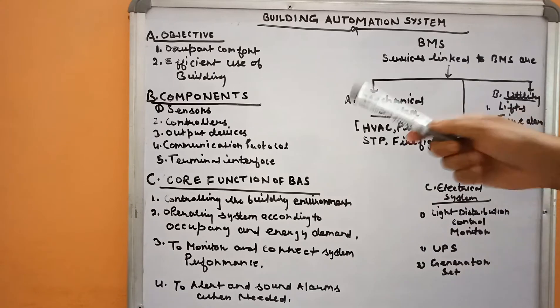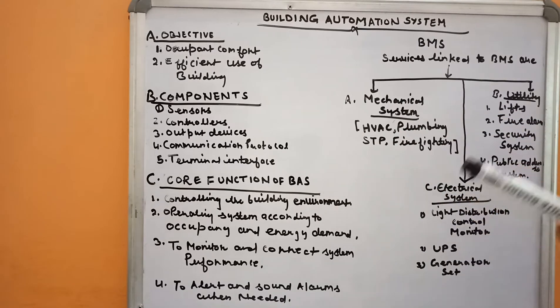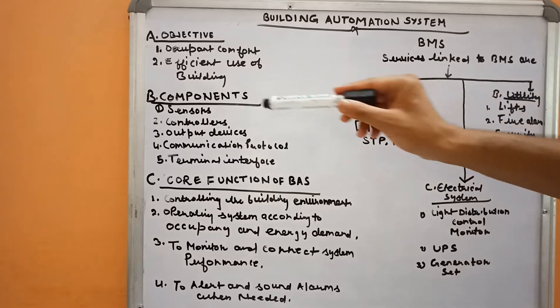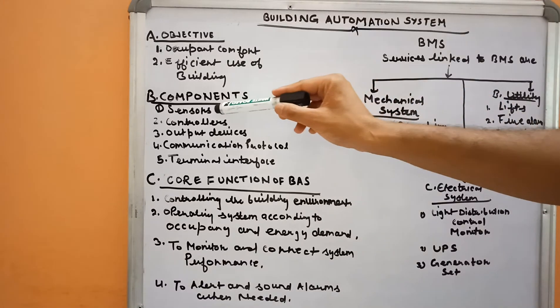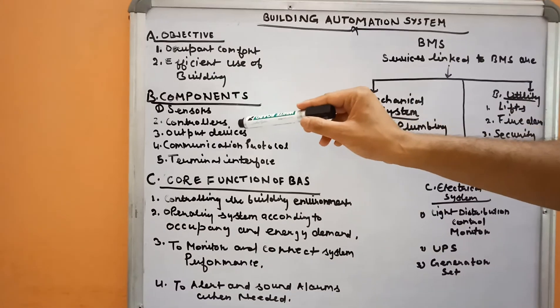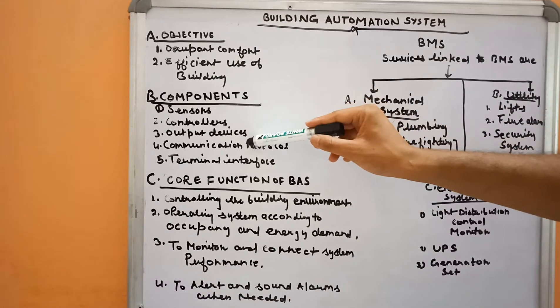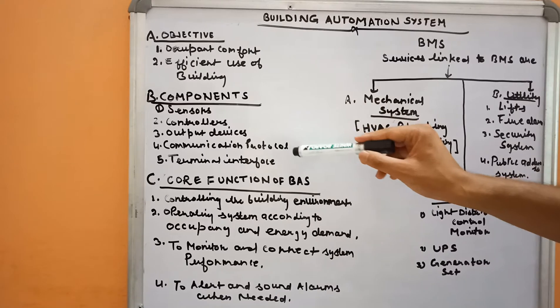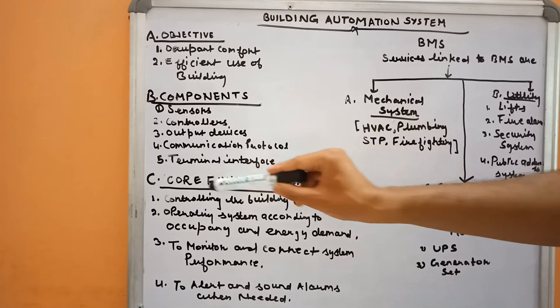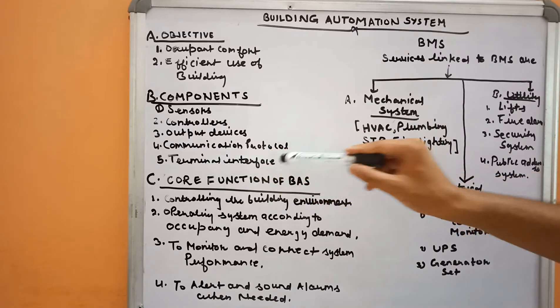What makes the building automation system work? The components are: first, sensors; then controllers; output devices; communication protocol; and terminal interface.